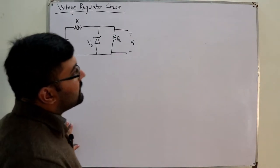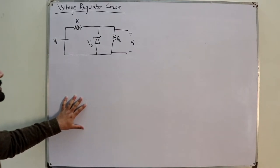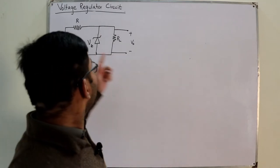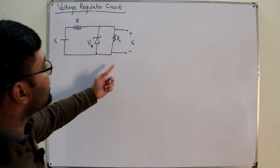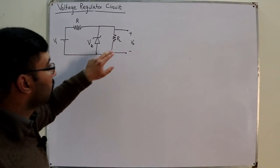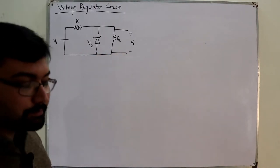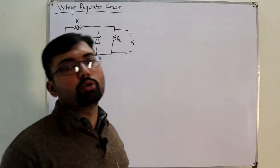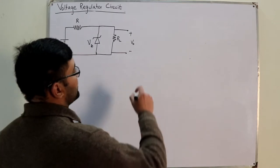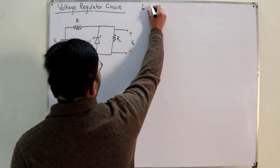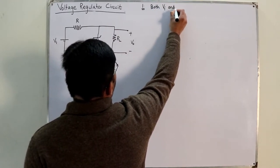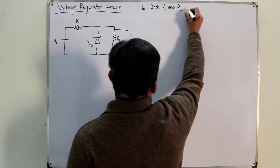I told you about this circuit. I told you about line regulation, in which the input is variable and load is constant. I told you about load regulation, where the load is changing and input is constant. We could also have both of them fixed. The first case is that both input voltage and RL are fixed — this is again a repetition from the previous video.